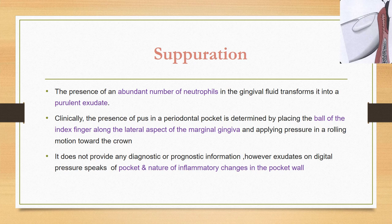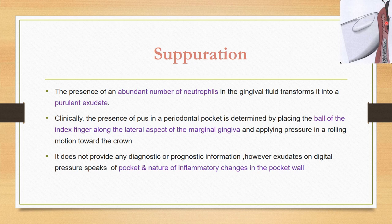Suppuration refers to the accumulation of purulent exudate. The presence of abundant neutrophils in the gingival fluid transforms it into purulent exudate. Clinically, the presence of pus in a periodontal pocket is determined by placing the ball of the index finger along the lateral aspect of the gingival margin and applying pressure in a rolling motion toward the crown. Exudate on digital pressure indicates pocket depth and the nature of inflammatory changes in the pocket.